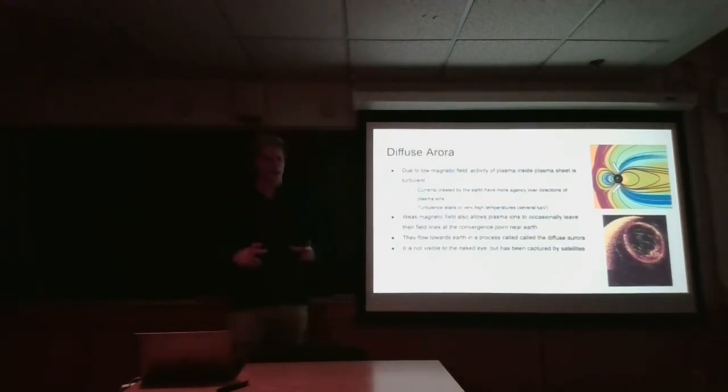That image is capturing the ions that have left the plasma sheet and create this diffuse aurora around the Earth. It's not visible to the naked eye, because we can't really see ions. But satellites are able to capture it.